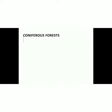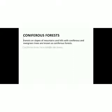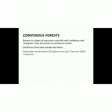The first type is coniferous forest. Coniferous forest is the forest found on slopes of mountains and hills with coniferous and evergreen trees. Coniferous trees are trees which have needle-like leaves. Evergreen trees are ones which remain green throughout the year. So areas dominated by coniferous and evergreen trees are known as coniferous forest.